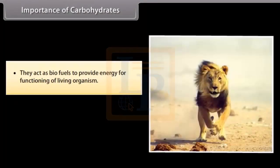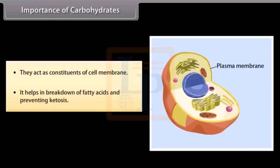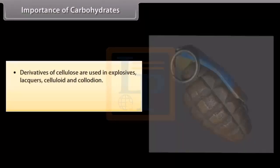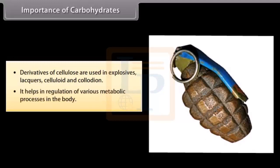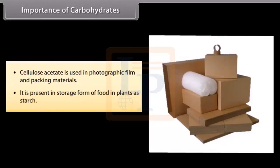The importance of carbohydrates: they act as biofuels to provide energy for the functioning of living organisms. They act as constituents of cell membranes. They help in the breakdown of fatty acids and preventing ketosis. Derivatives of cellulose are used in explosives, lacquers, celluloid, and collodion. They help in regulation of various metabolic processes in the body. Cellulose acetate is used in photographic film and packing materials. Carbohydrates are present in the storage form of food in plants as starch.